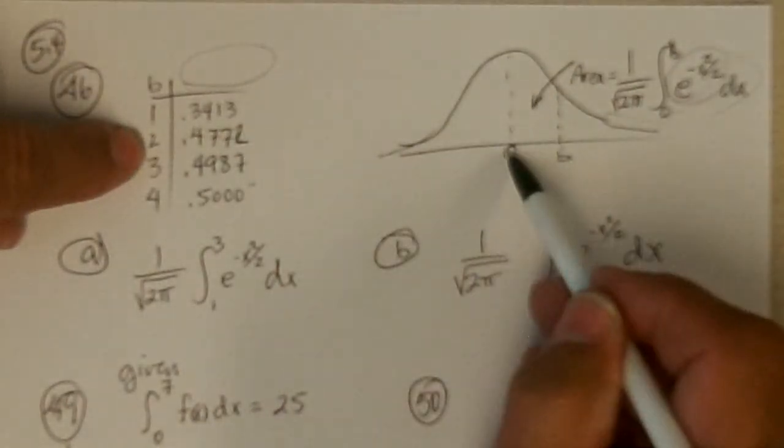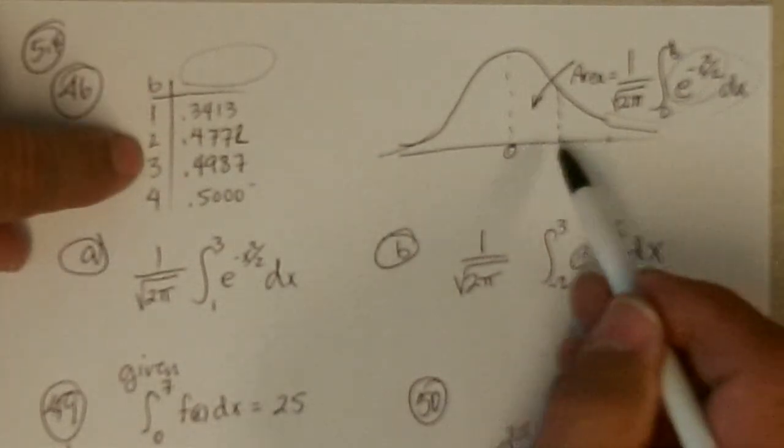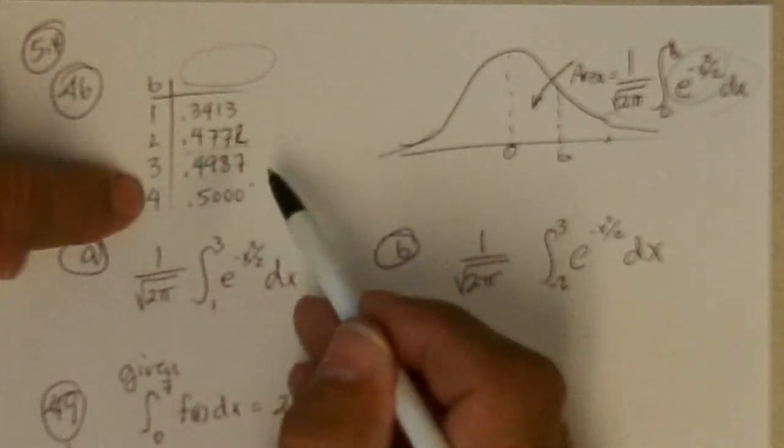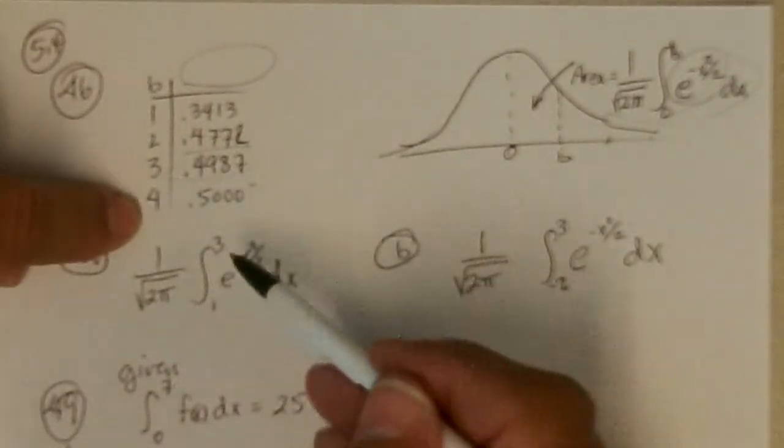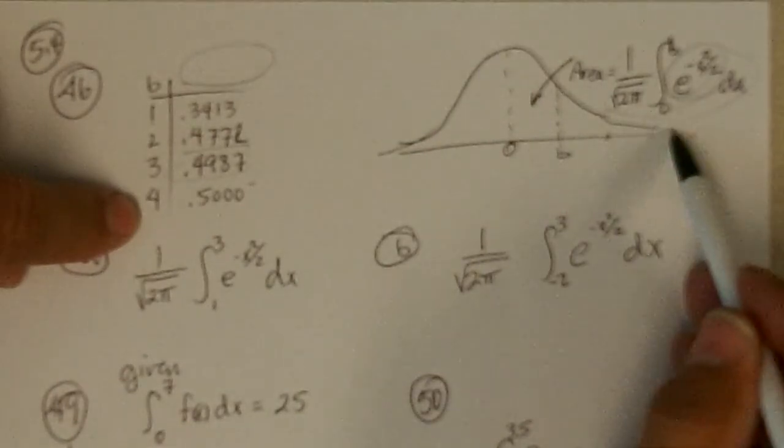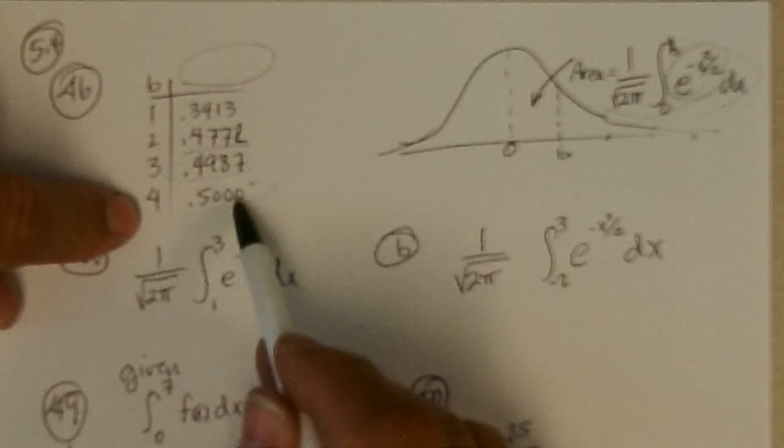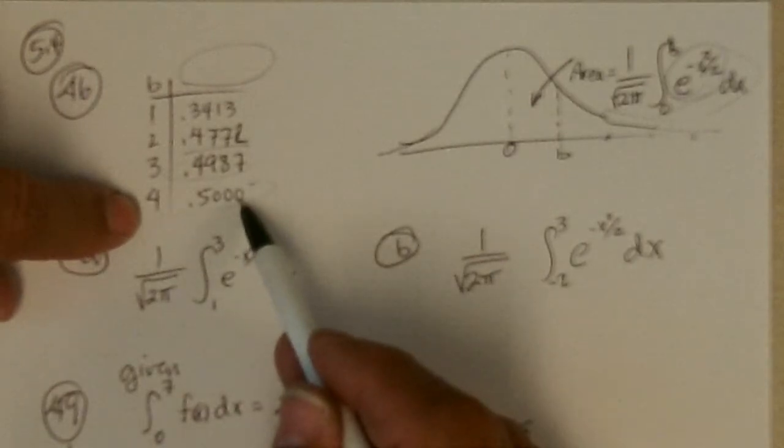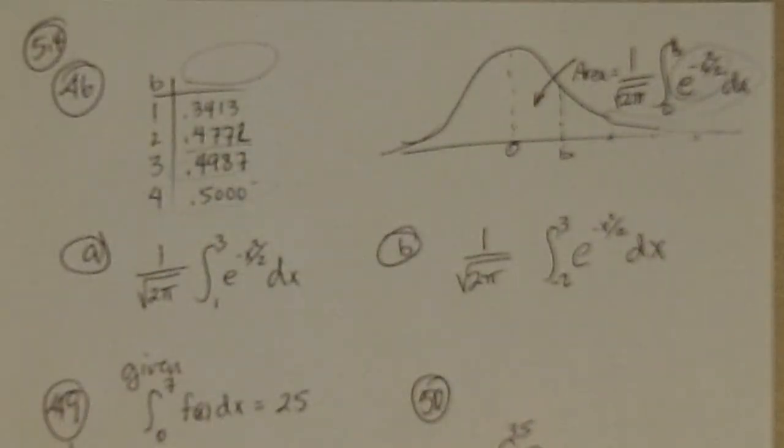If you went from 0 to 2, b is 2, you get this much area. If you went from 0 to 3, you get this much area. 0 to 4, you get this. Well, it says .500 and that's what it is rounded, but it's actually a little bit less. There is a minute amount of area out there beyond 4.